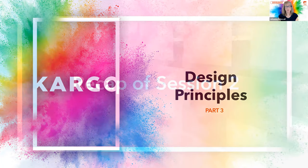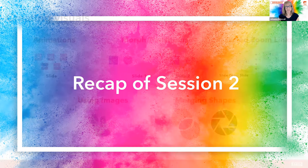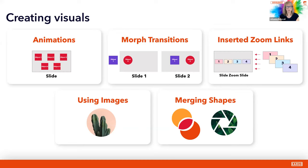First, a quick recap of session number two. You got a handout after last session and a couple of practices you could work on at home. Those really summarize what we were working on. In session number two, we talked about different ways of creating visuals. We started off by talking about animations — you can have multiple animations for different objects and animate your content as you want. The key to a good animated slide begins in the selection pane.